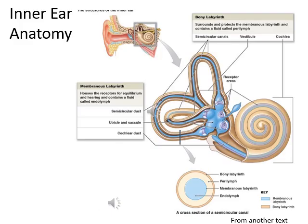From lecture 11a we already learned about the semicircular canals. For this lecture we'll focus on the cochlea. The cochlea is composed of two parts: the yellow part, called the bony labyrinth, and the blue part, called the membranous labyrinth. Inside the membranous labyrinth you have endolymph, and in the bony labyrinth you have perilymph.